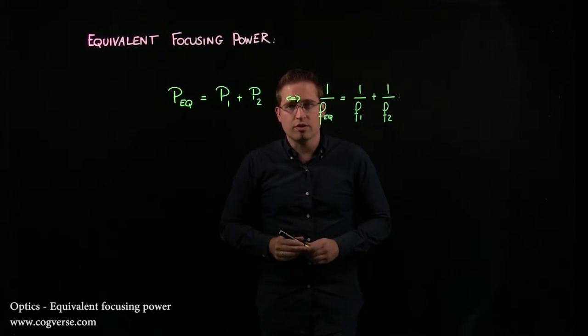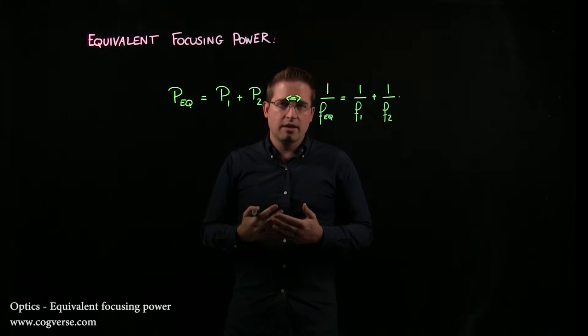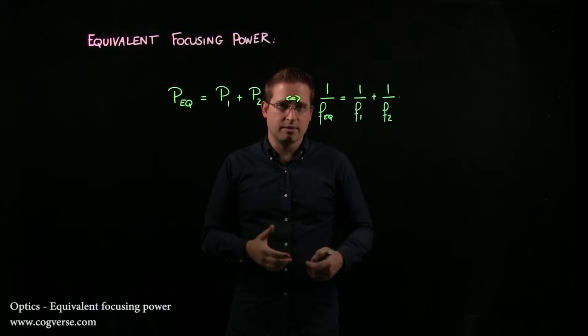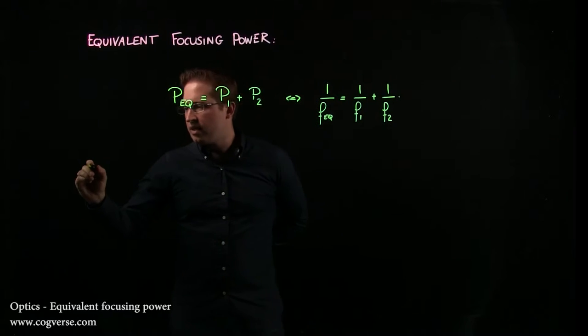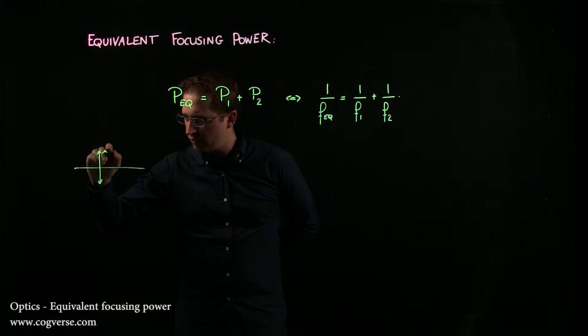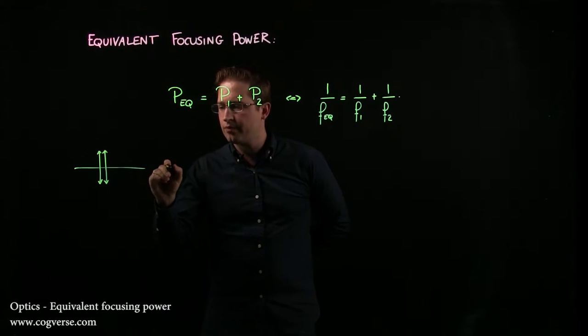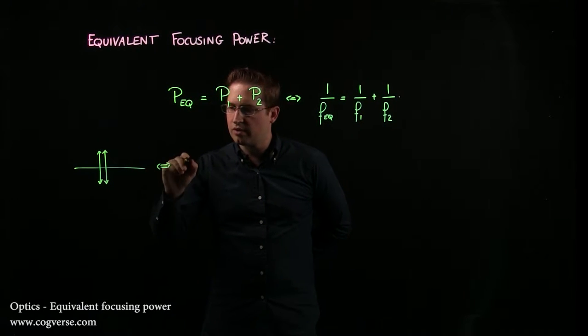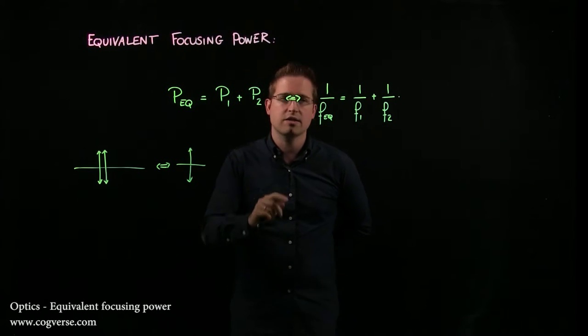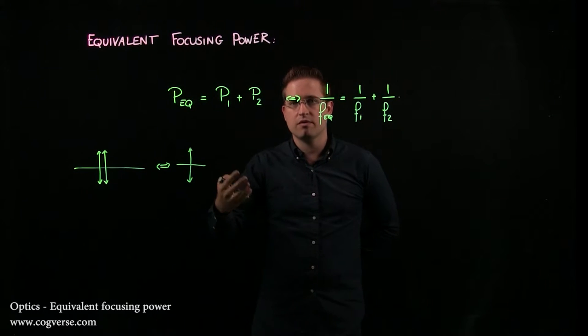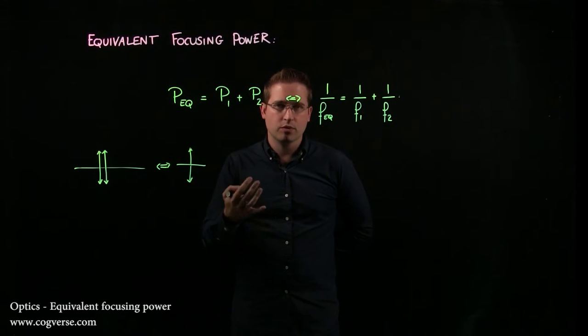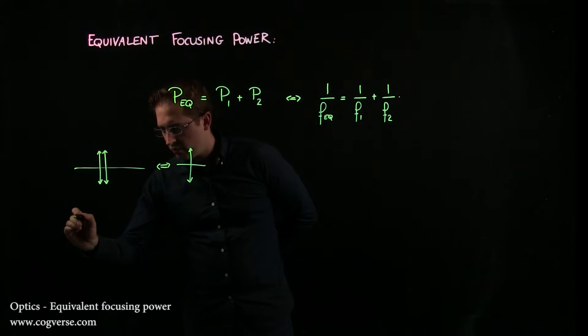The nature of the equivalent lens depends on the individual focusing powers and which one is the biggest. If we assemble two converging lenses right next to each other, this is obviously going to be equivalent to one single converging lens because p1 and p2 are positive. Therefore, p equivalent is positive and the equivalent lens is a converging lens.